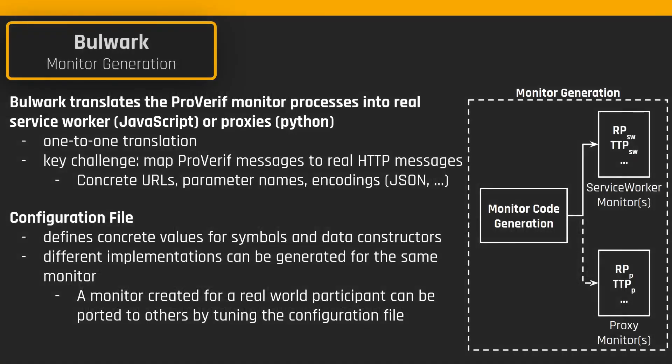The abstract monitor processes are finally translated into executable service workers written in JavaScript or proxies written in Python. This is a relatively direct one-to-one translation, and the key challenge is to map ProVerif messages to real HTTP messages. As an example, different RPs integrating the same TTP will host the protocol at different URLs. HTTP may also use different parameter names or encodings. We deal with this by means of a configuration file, which defines concrete values for symbols and data constructors. Since these mappings are written directly in the target language, different implementations can be generated for the same monitor. A single specification created for the Google TTP, for example, can be easily ported to Facebook by tuning the configuration file.